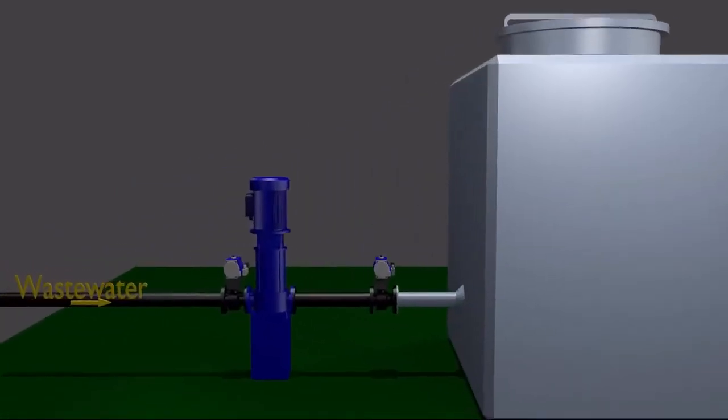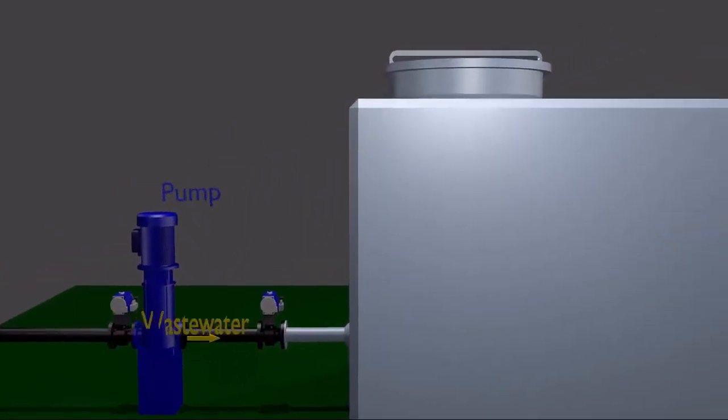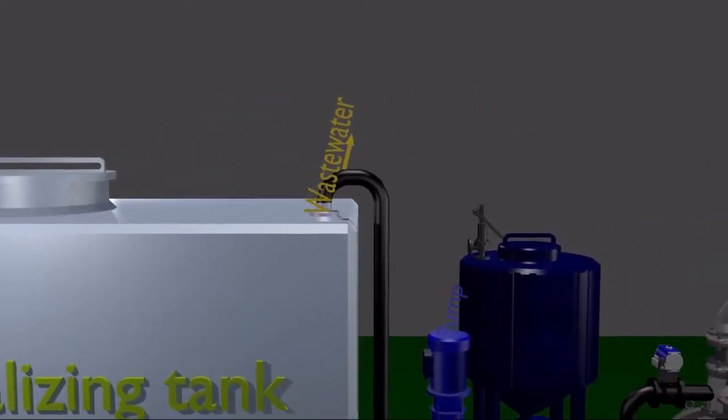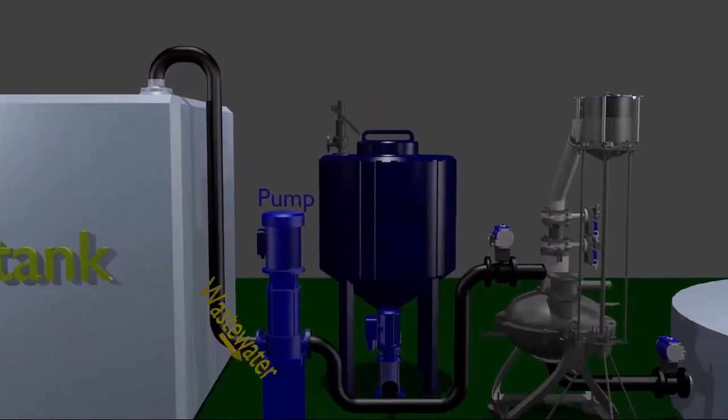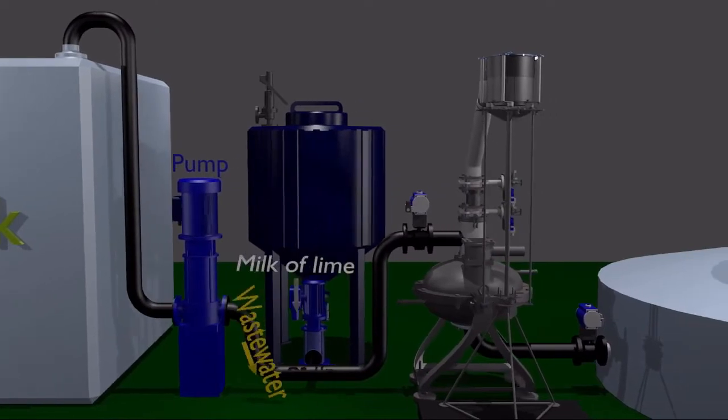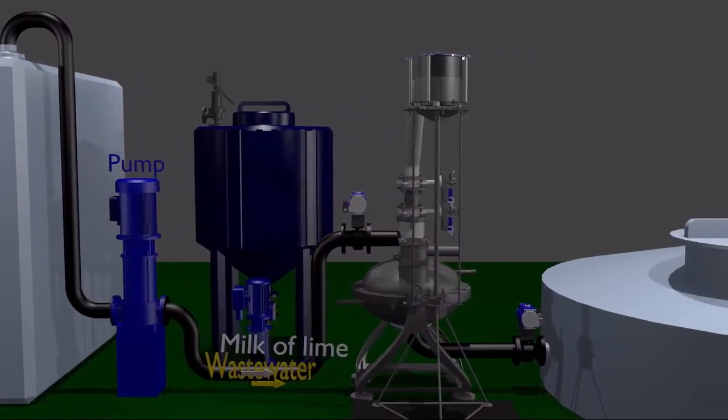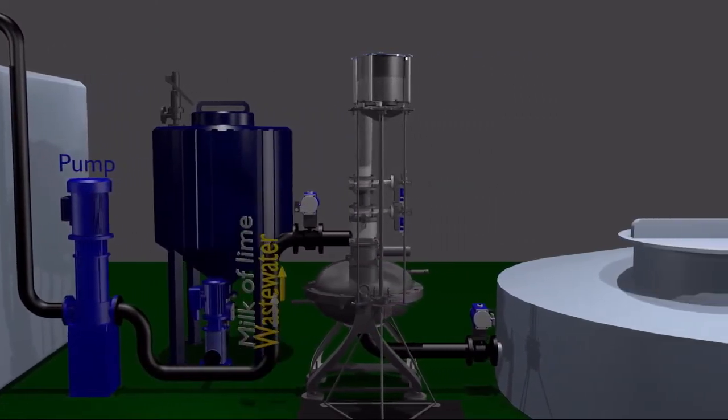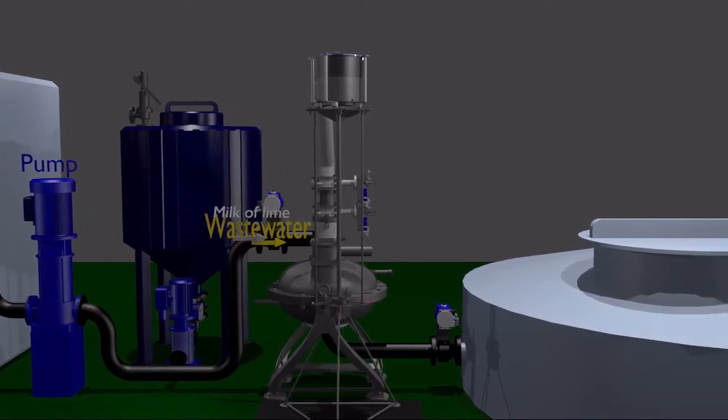The process in the AVS mill occurs in one stage, therefore equalized wastewater is pumped directly into the AVS together with lime milk from the consumption tank. Both components are intensively mixed, dispersed and subjected to electromagnetic field in the AVS, then pumped to settling tanks for clarification.